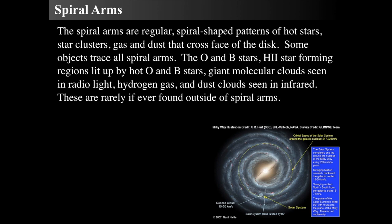Giant molecular clouds can be seen in radio light, and hydrogen gas and dust clouds can be seen in the infrared. But these objects are hardly ever found outside the spiral arms, meaning above and below, or specifically between those things. So the gas clouds must be there, but they get bunched up.